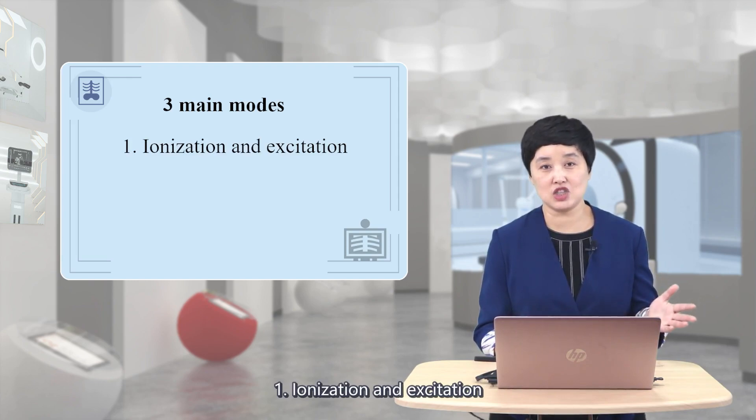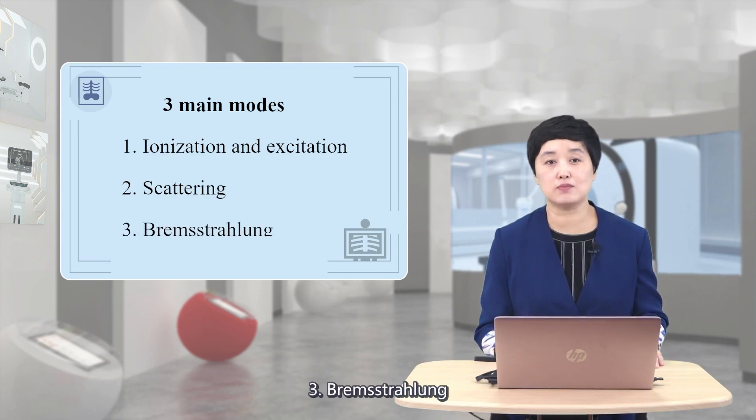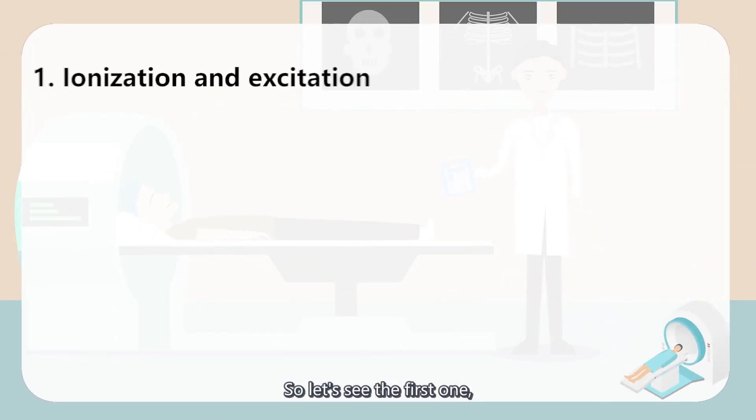The first one is ionization and excitation, the second one is scattering, and the last one is Bremsstrahlung. So let's see the first one, ionization and excitation.